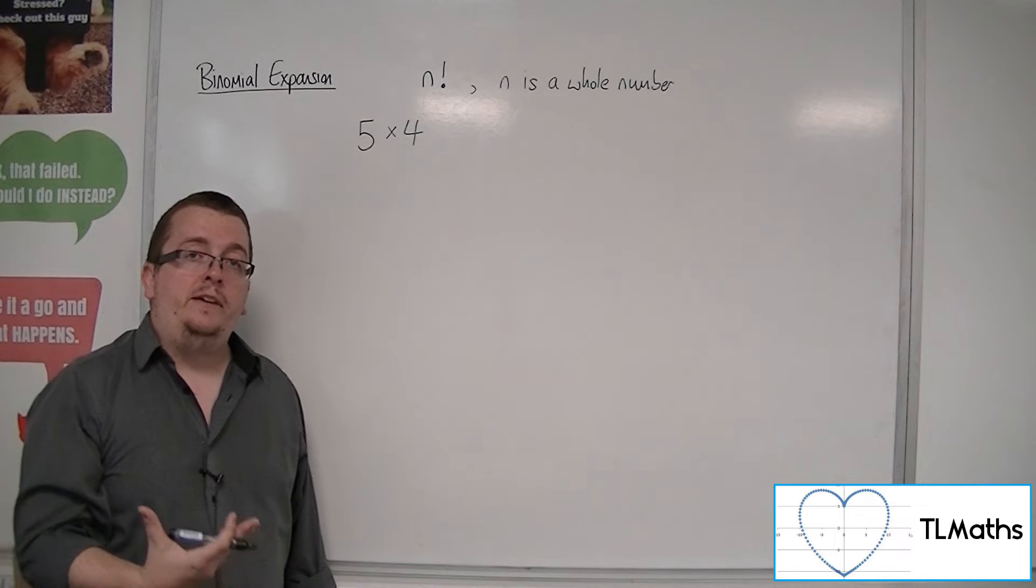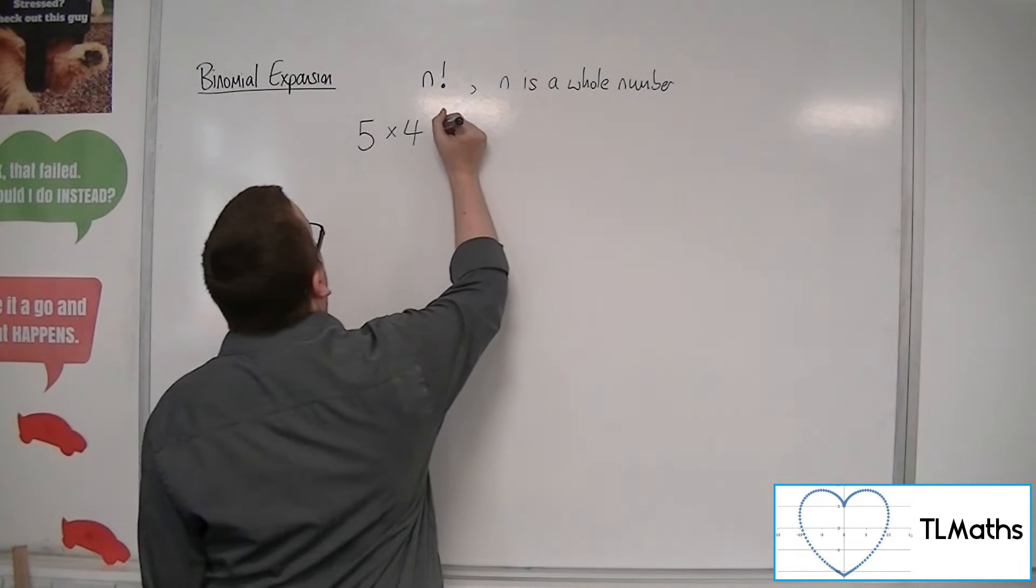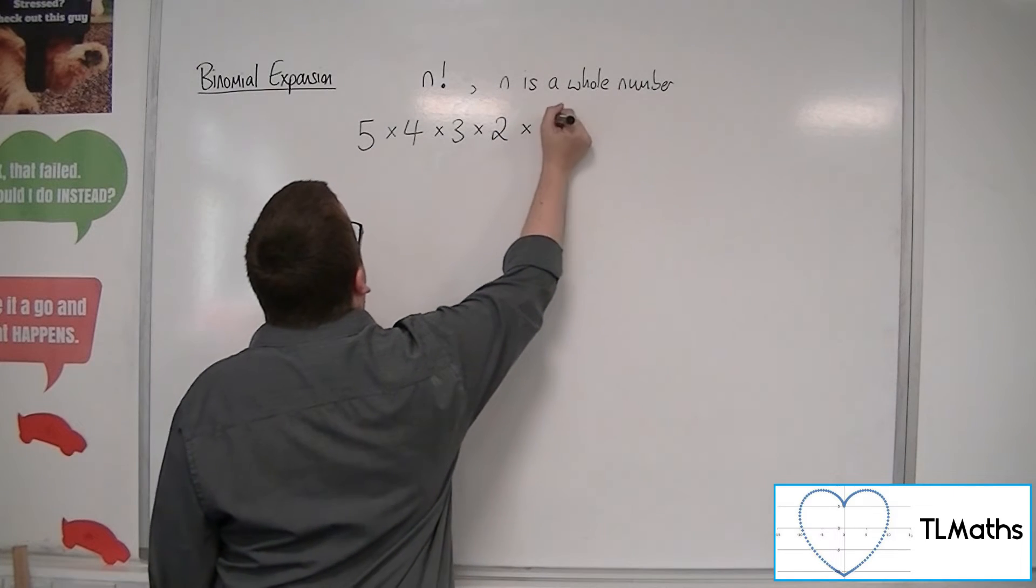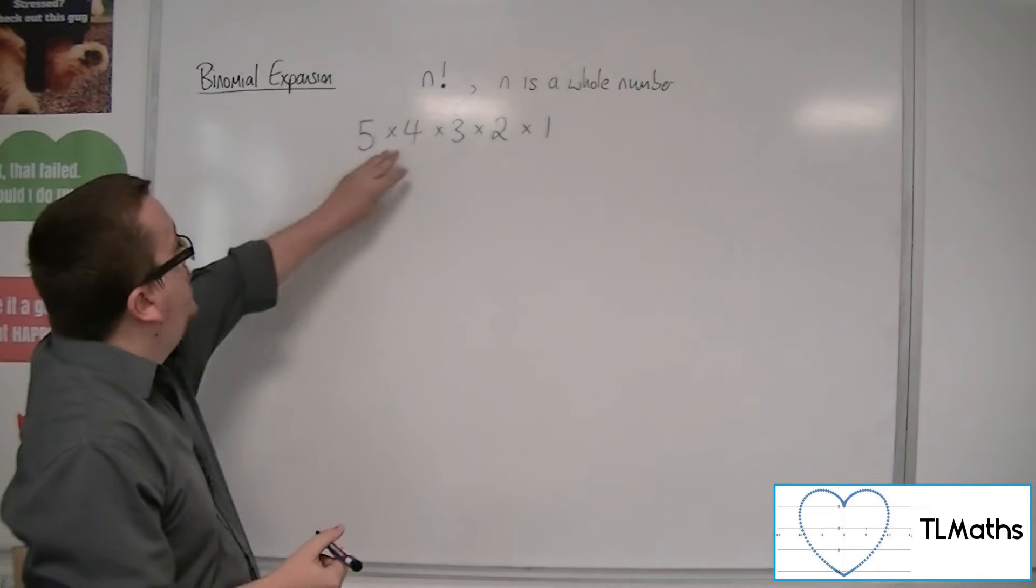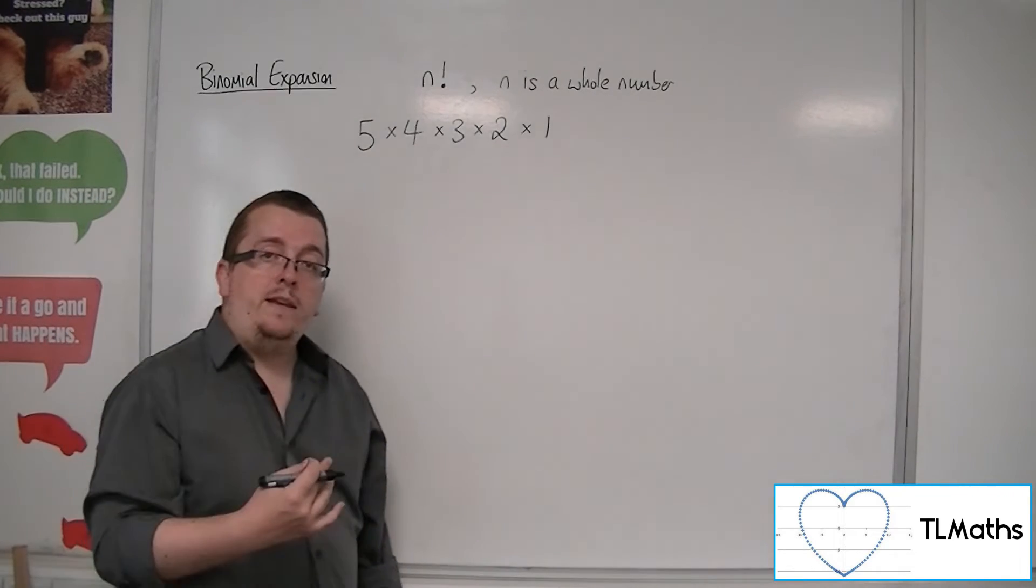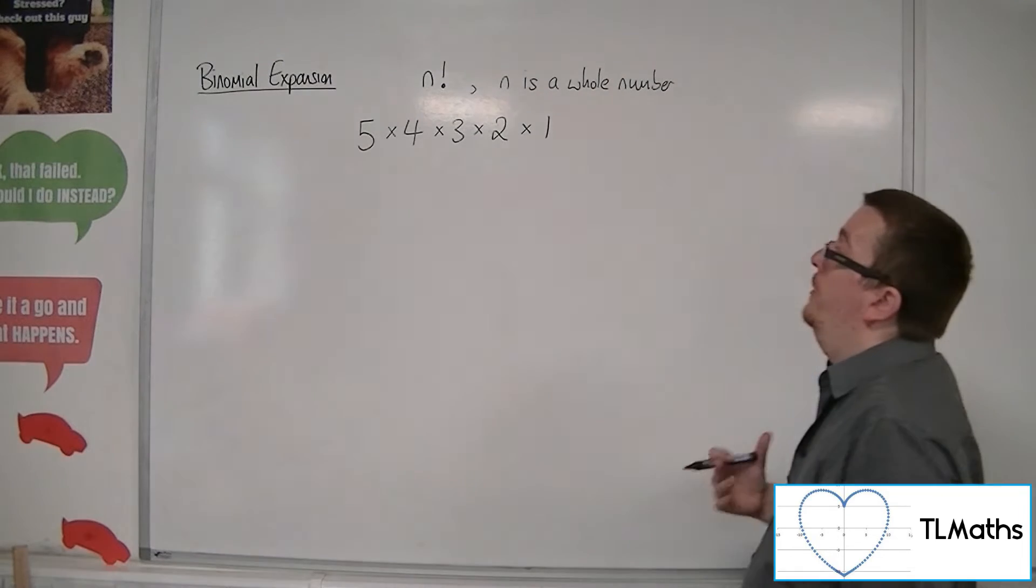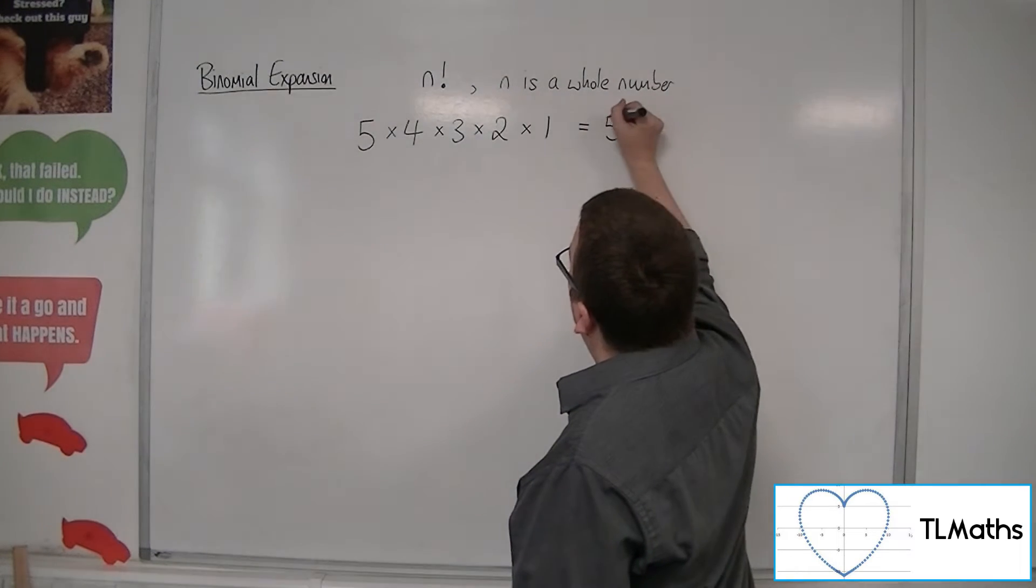So there's currently 20 possibilities. We would be left with three runners left for third place, two runners left for fourth place, and one runner left for last place. So actually we have five times four times three times two times one different finishing orders for this race. And we write this as five factorial.